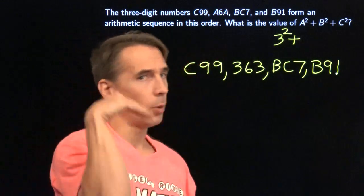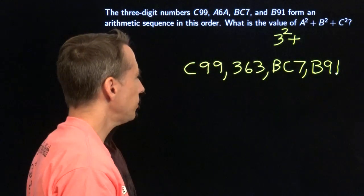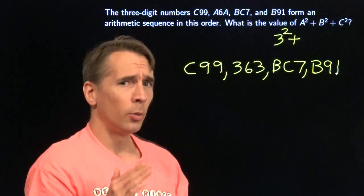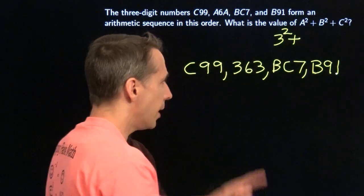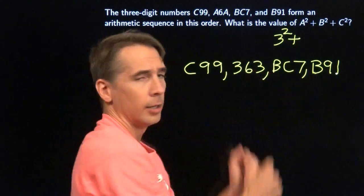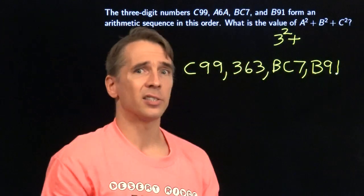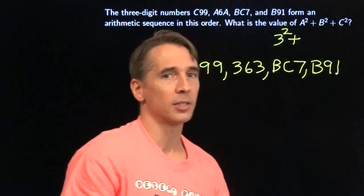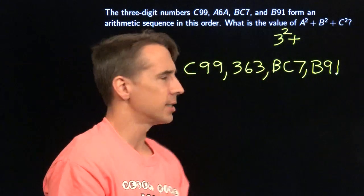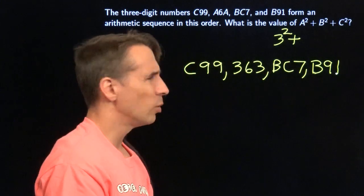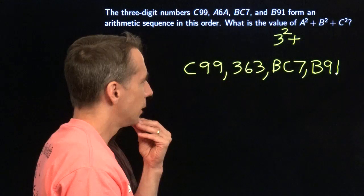We still don't even know if we're going up or down. But looking at these last two, whether we're going up or we're going down, we're not moving by more than 100. Because these have the same hundreds digits. So we're either adding some number that's less than 100 or subtracting some number that's less than 100 at each step. But I still don't know what number that is.